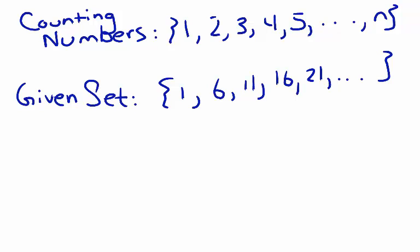Looking at our given set, or problem set, we can see that the difference between each number is five. Coming up with the correct general term can be tricky. In our case, the correct general term is five n plus x, and here's why.